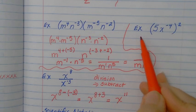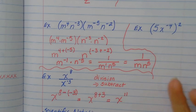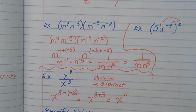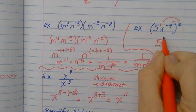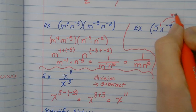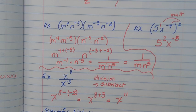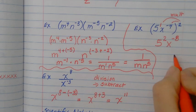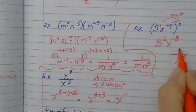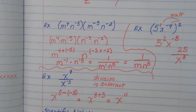Going back to this one: we have an exponent outside the parenthesis, so it gets multiplied in — distributing it to the exponents inside. That 5 has an exponent of 1 on it, so this is 5 squared; negative 4 times positive 2 gives x to the negative 8. Since x has a negative exponent it goes to the denominator, and 5 squared we change to 25. So the answer is 25 over x to the eighth.